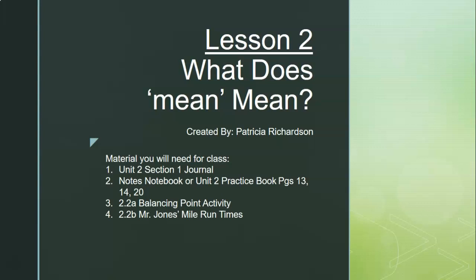Materials you're going to need for lesson two today: you will need your unit two section one journal open and ready to go, your notes notebook, and your unit two practice book pages 13, 14, and 20. You will also need two activities from our Canvas page that you will be turning in today — the 2.2A balancing point activity and the 2.2B Mr. Jones's mile run times activity.